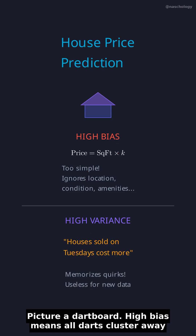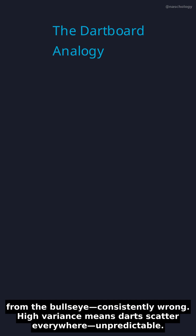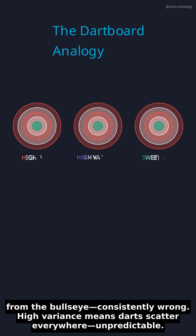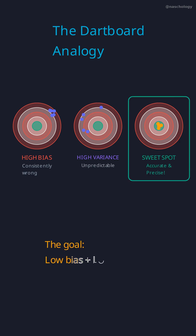Picture a dartboard. High bias means all darts cluster away from the bullseye — consistently wrong. High variance means darts scatter everywhere, unpredictable. The sweet spot? Darts grouped tightly on the bullseye.